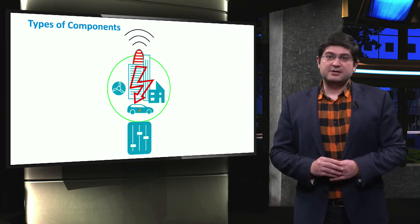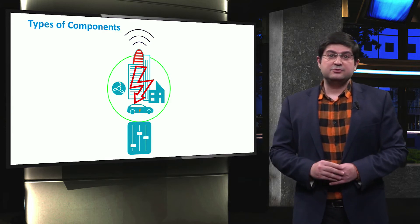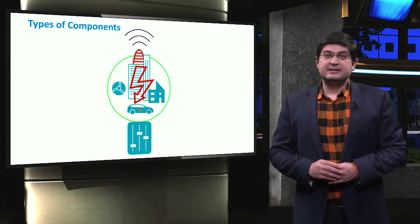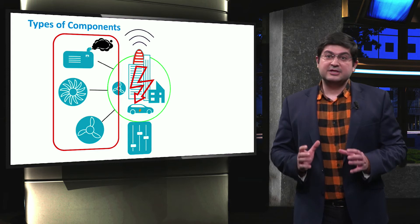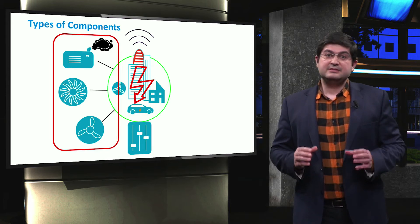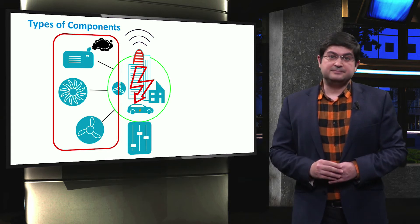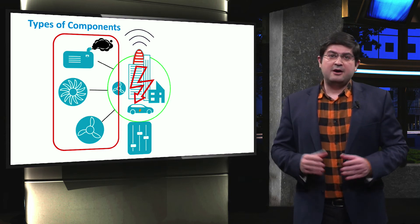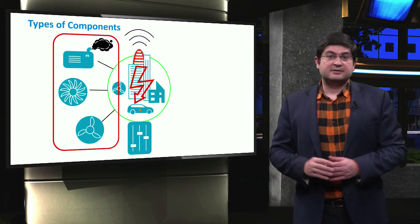We discussed that microgrids shall be able to isolate the internal faults using proper protection methods. If the fault is not quickly cleared, then some electrical equipment might be damaged. Also, this delay associated with the protection system may result in the instability of the distributed generators based on direct electrical machines. Diesel engines, microturbines, and gas turbines are examples of these distributed generators.